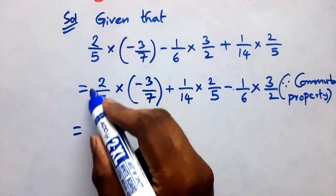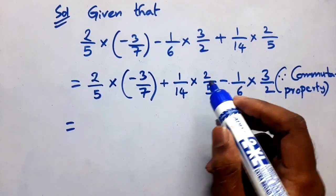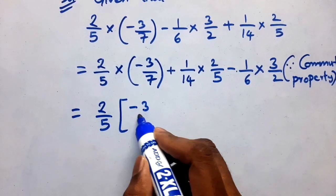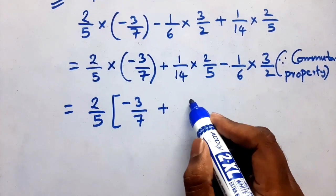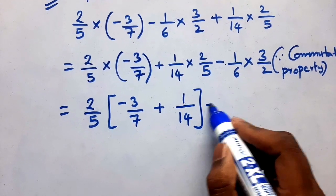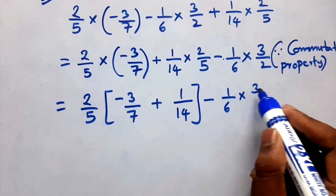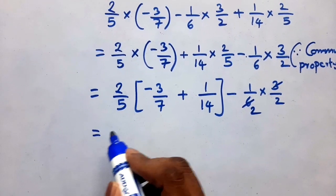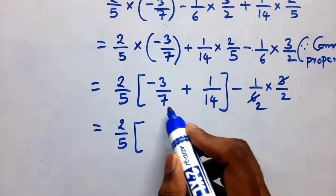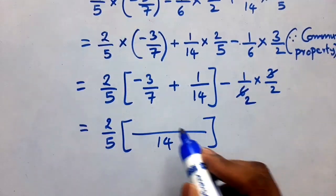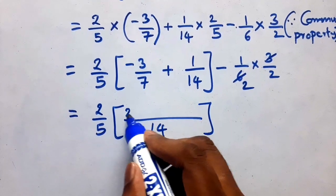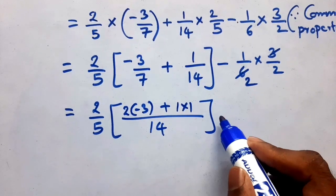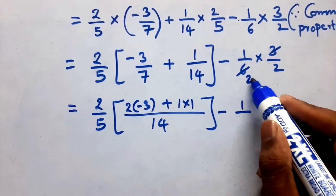Next, the first term has 2 by 5 and here also 2 by 5 is there, so take 2 by 5 as common. Then minus 3 by 7 is left, plus 1 by 14 is left, then minus 1 by 6 into 3 by 2. Simplify: 3 divides 6 two times. So 2 by 5 into bracket — LCM of 7 and 14 is 14. Seven divides 14 two times: 2 into minus 3. Plus 14 divides 14 one time: 1 into 1.